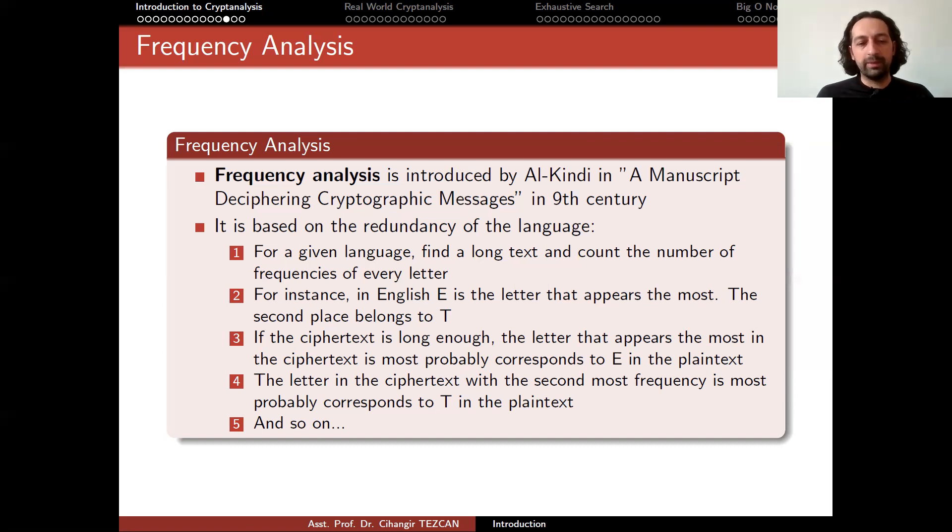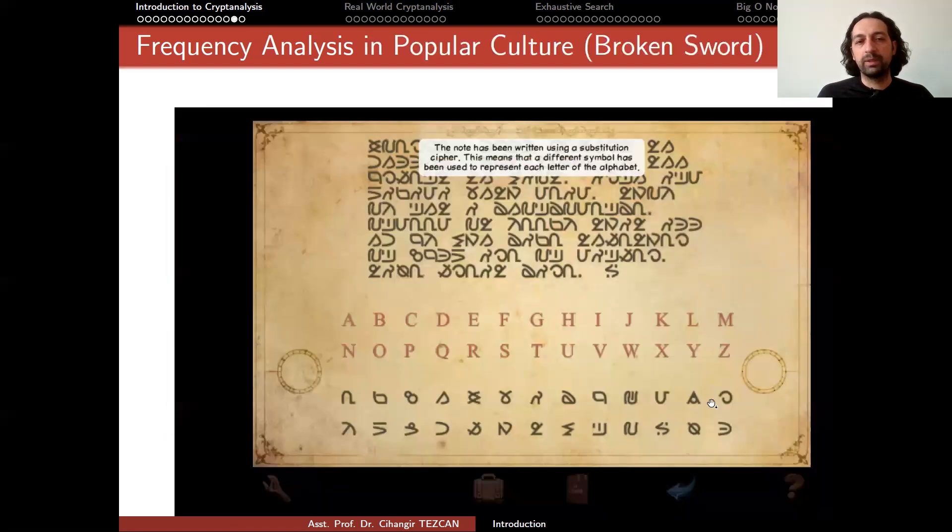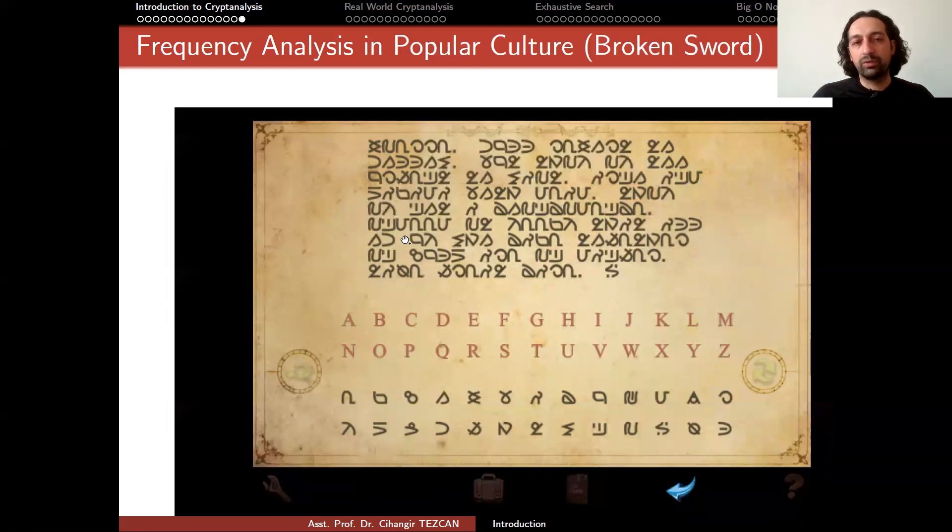And also, this knowledge sometimes helps you in popular culture too. If you are playing video games, most of the time, most of the puzzles they ask can be solved by frequency analysis. Of course, most of the time, the question becomes easier. For instance, I took a screenshot from a video game called Broken Sword. Here, as it says, you capture the note and it says that the note has been written using a substitution cipher. This means that a different symbol has been used to represent each letter of the alphabet. So these symbols actually are some of the letters. So you need to find which one goes to which.